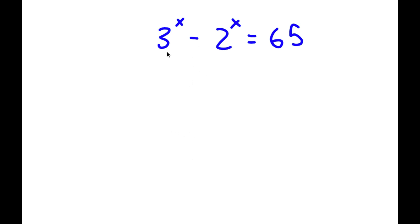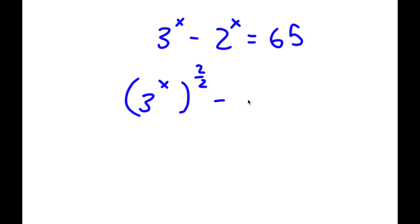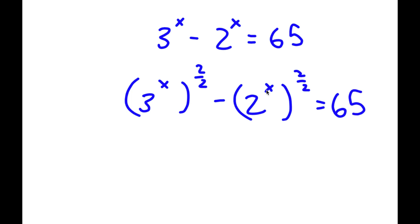In this problem, I have 3 to the power of x minus 2 to the power of x is equal to 65. To start, I'm going to take the power of 2 over 2 on both sides. So now I have 3 to the power of x to the power of 2 over 2 minus 2 to the power of x to the power of 2 over 2 is equal to 65. And 2 over 2 is the same thing as 1, and anything to the power of 1 is itself, so we are still going by the rules of mathematics here.